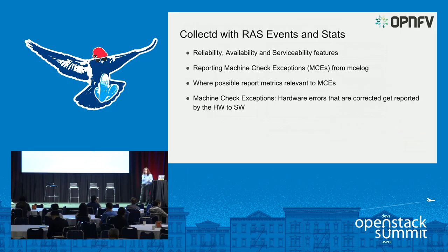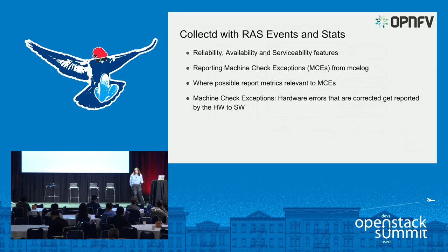We also have RAS events and statistics. These are a set of platform features that provide information on reliability, availability and serviceability. RAS features detect and correct faults, and when they find a fault — whether or not they correct it — you get a lot of information about what's going on in your system at that time. In the short term you know something's going wrong; in the long term you can see what happened around a fault and be able to prevent it in future.